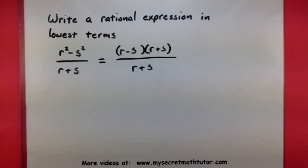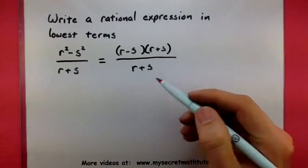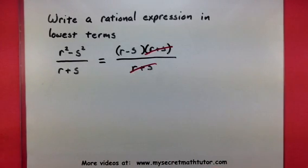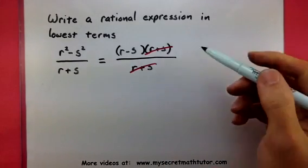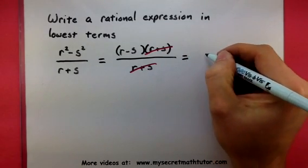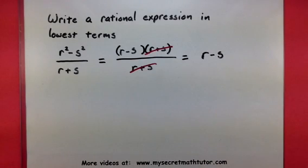Now when I do that factoring process, something should jump out at you. Notice how in the top and in the bottom, there's an r plus s. That's great — this means we have a common factor that we can go ahead and cancel out. There are no other common factors, so I'm just going to write what's left over: r minus s. And sure enough, that becomes my final answer. This rational expression written in lowest terms is simply r minus s.